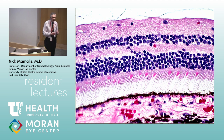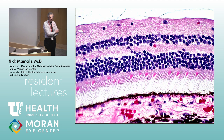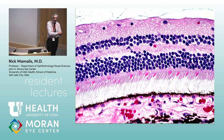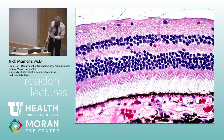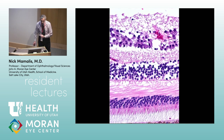The axon from the ganglion cell goes all the way through the nerve fiber layer, through the chiasm, back through the radiations, and finally synapses at the lateral geniculate body. This is a really long axon. The problem is that anywhere along that path where it's interrupted could eventually cause death to that cell — all the way from the lateral geniculate body forward to the ganglion cell nucleus.